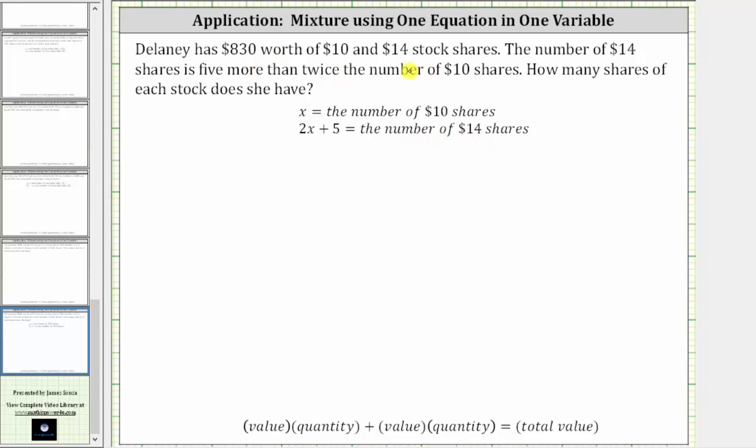Notice twice the number of $10 shares would be two times x or 2x, and we want five more than twice the number of $10 shares, which is why the expression for the number of $14 shares is 2x plus 5.